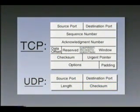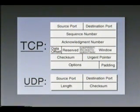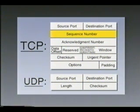The reason the User Datagram Protocol is chosen over TCP and its reliability guarantee is that TCP imposes a heavy overhead. For each TCP packet, it computes a checksum, has to keep track of sequence numbers, and figures out if something was dropped.